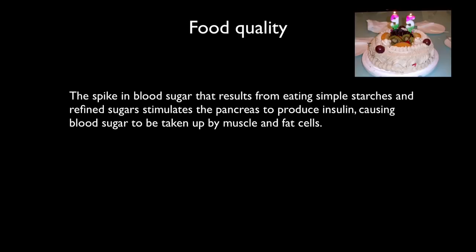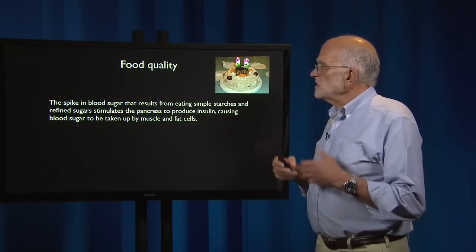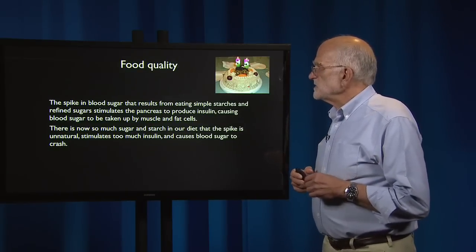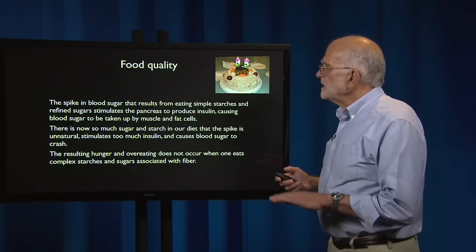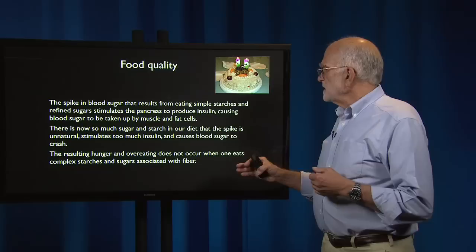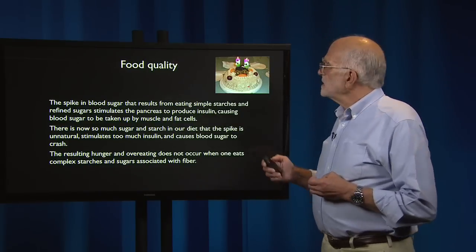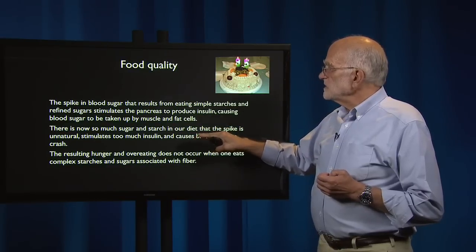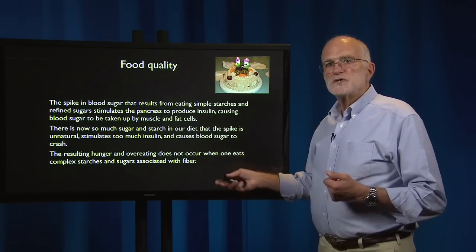If we have a lot of refined starch and sugar in our diet, we get a spike in blood sugar that stimulates the pancreas to produce insulin, which causes blood sugar to be taken up by muscle and fat cells. There is now so much sugar and starch in our diet that the spike is unnatural — it stimulates too much insulin, causing blood sugar to crash. We then get hungry and overeat. This would not occur if we were eating complex starches and sugars associated with fiber. So refined starches and simple sugars cause overproduction of insulin, a blood sugar crash, and hunger far sooner than it should occur.